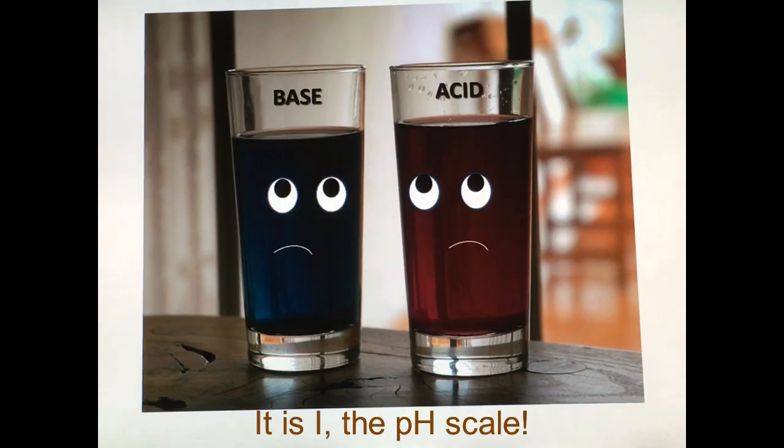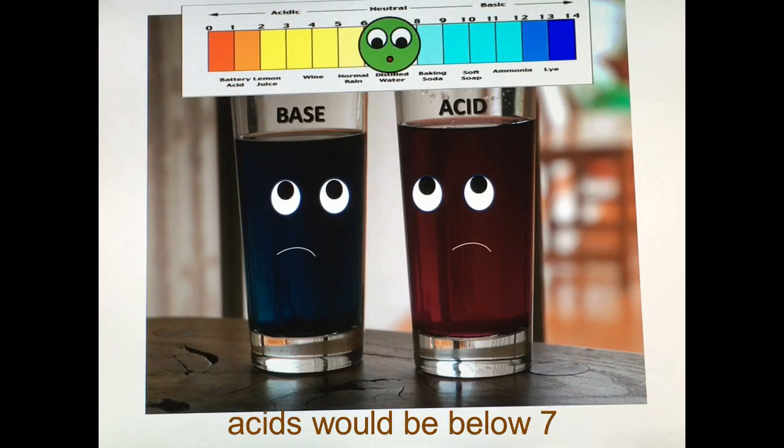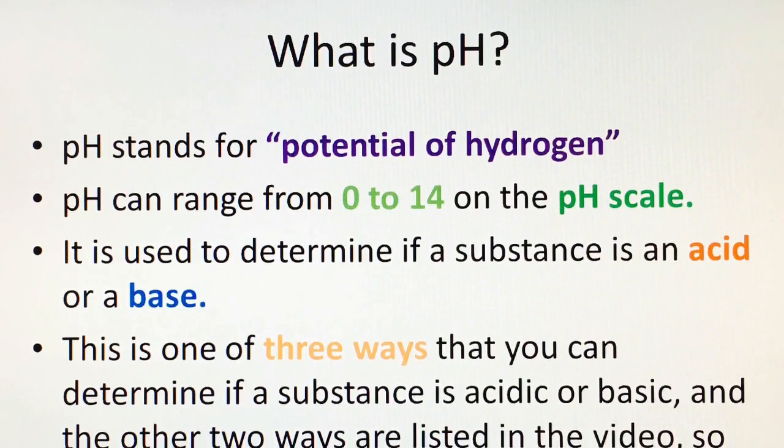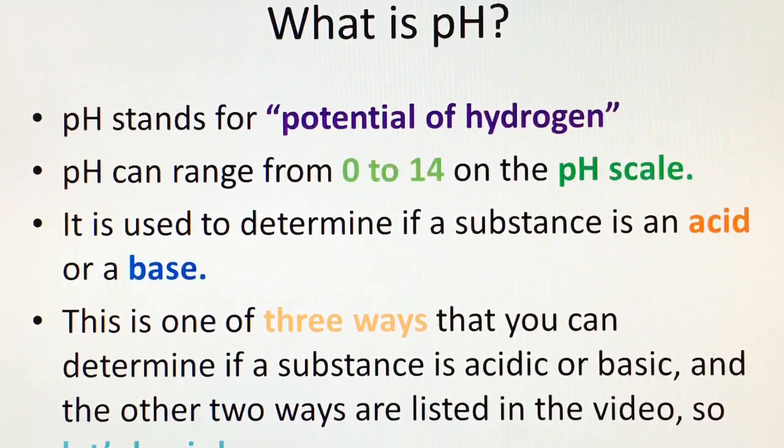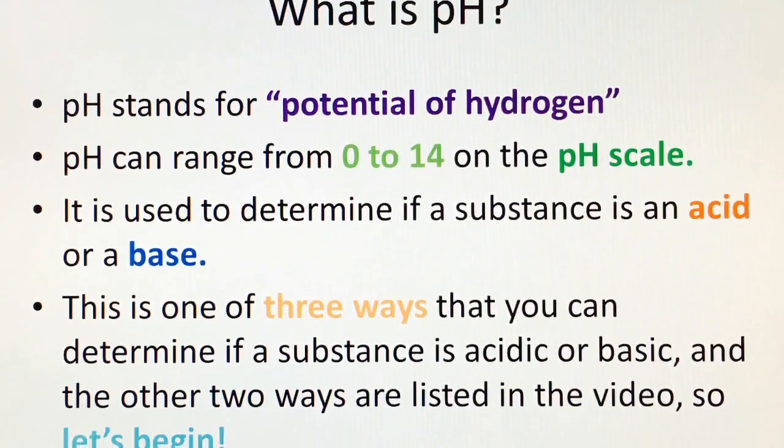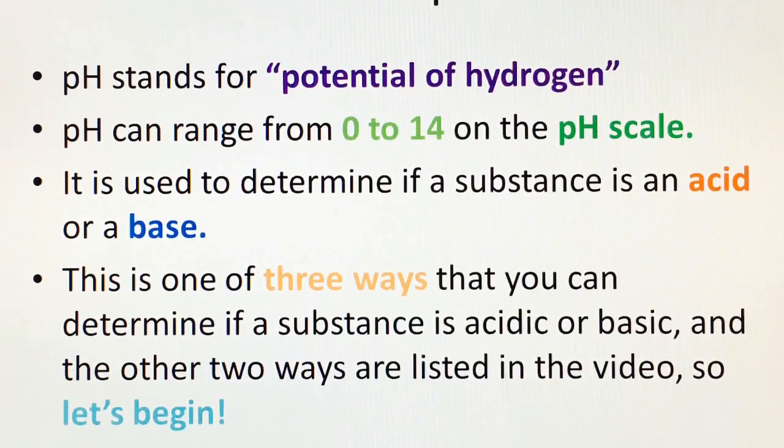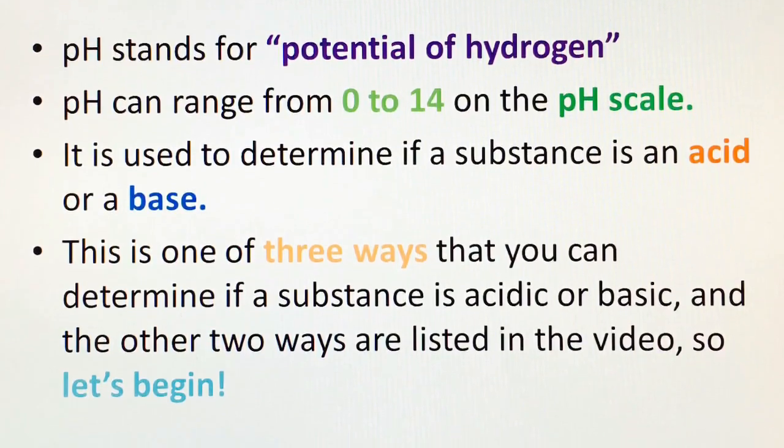So what is pH? pH stands for potential of hydrogen and it can range from 0 to 14 on the pH scale. It's used to determine if a substance is an acid or a base. This is one of three ways that you can determine if a substance is acidic or basic, and the other two ways are listed in the video.